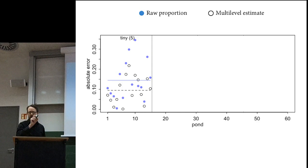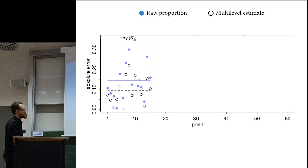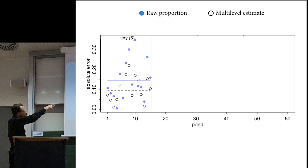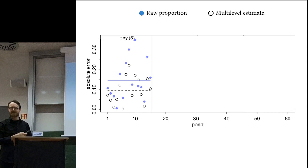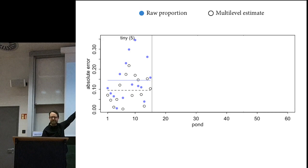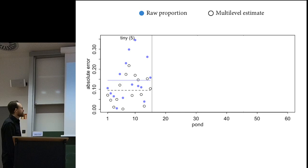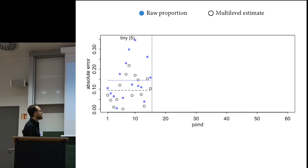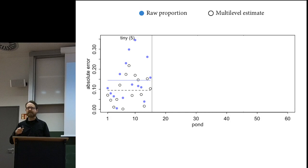Think of this as raw empiricism: I'm a maximally objective scientist using only the data from each pond to understand that pond. To do anything else would be biased—statisticians used to say this in the first part of the 20th century. The open circles are the multilevel estimates, the partial pooling estimator. On average, the open circles are below the closed circles for each pond—that means they're doing better, because big numbers are bad here since it's error on the vertical axis.